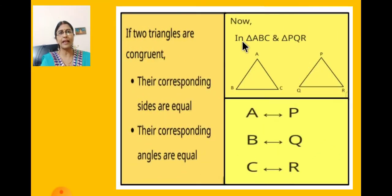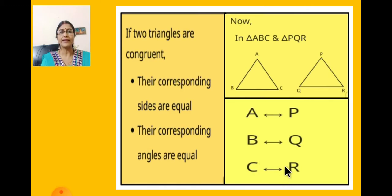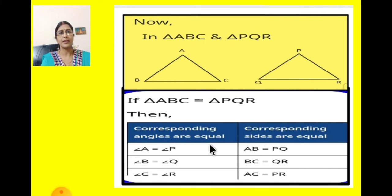Now let us take another example. In triangle ABC and triangle PQR, these two triangles are congruent. We know that if two triangles are congruent, their corresponding sides are equal and their corresponding angles are equal, and even their vertices are corresponding to each other. Here A is corresponding to P, B is corresponding to Q, and C is corresponding to R. Then the corresponding sides will be equal and corresponding angles will also be equal.